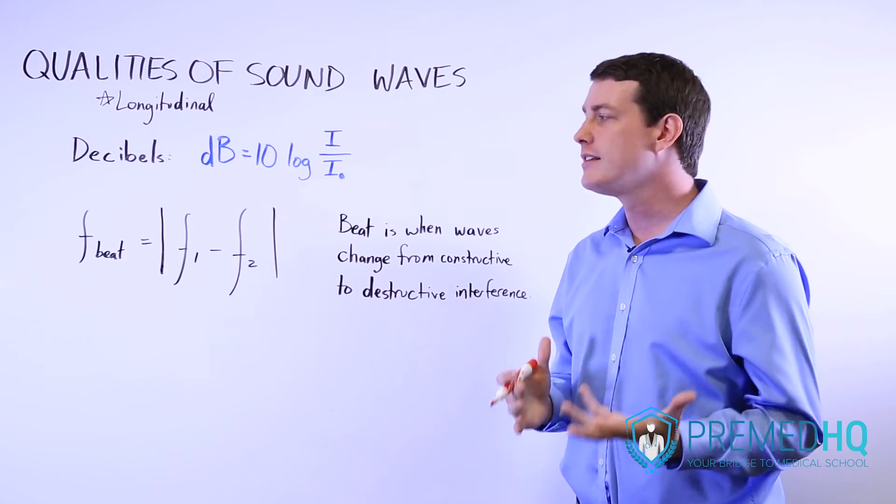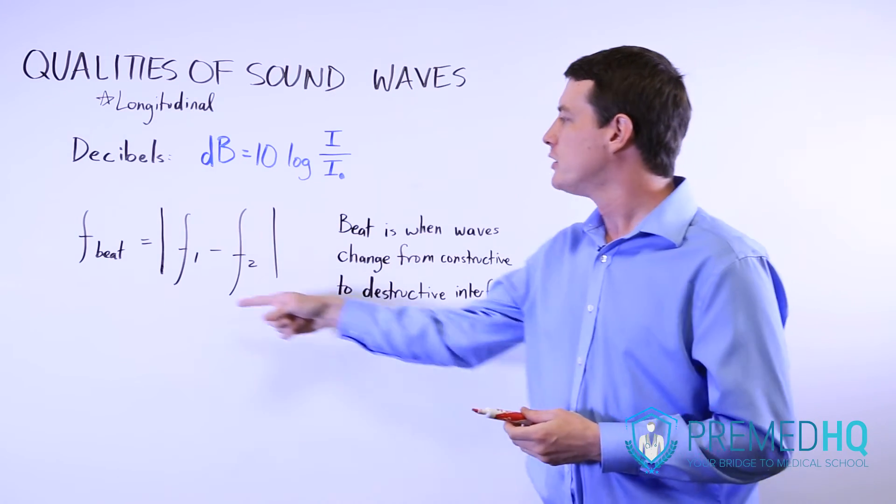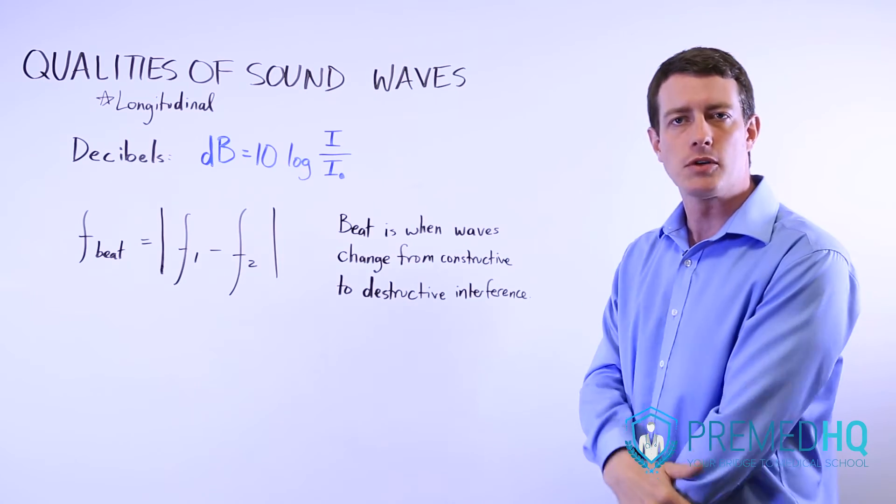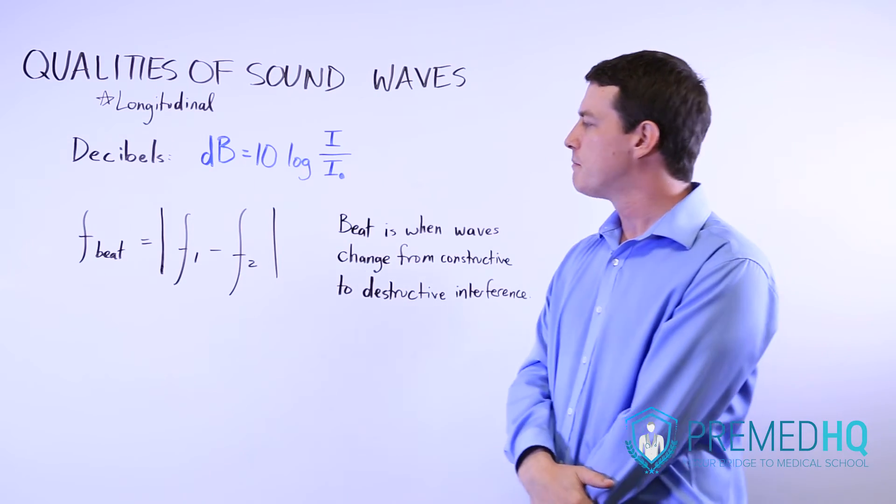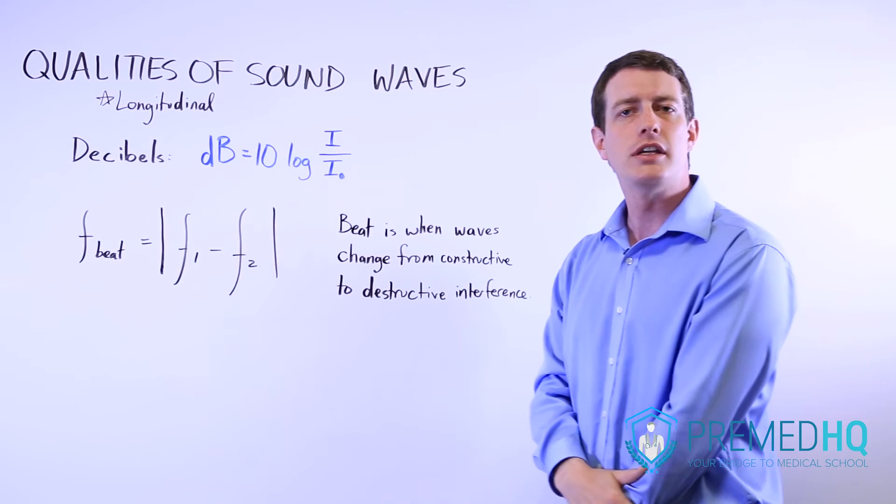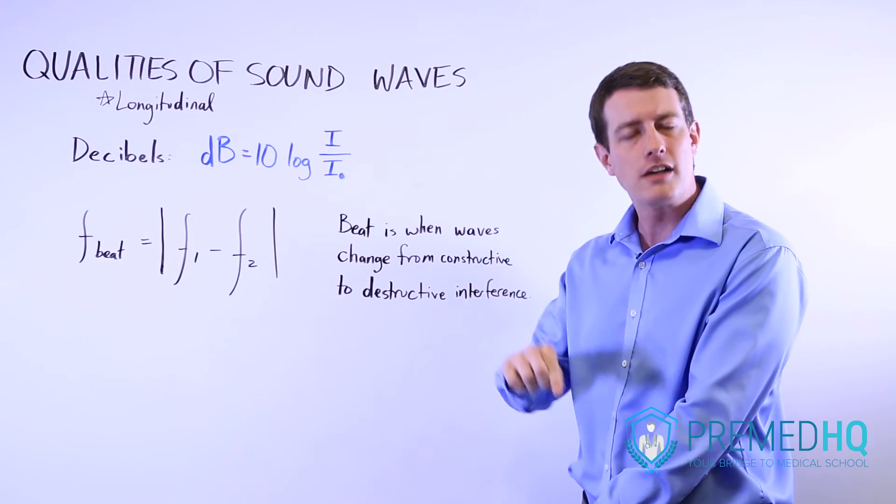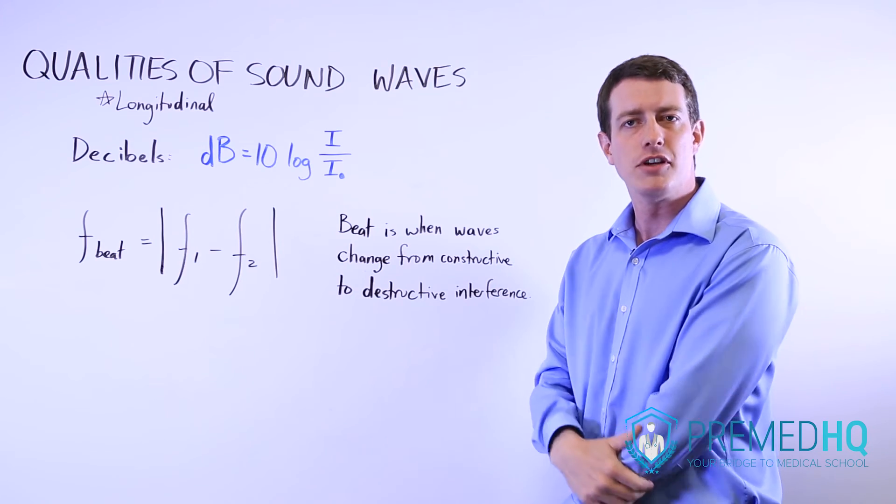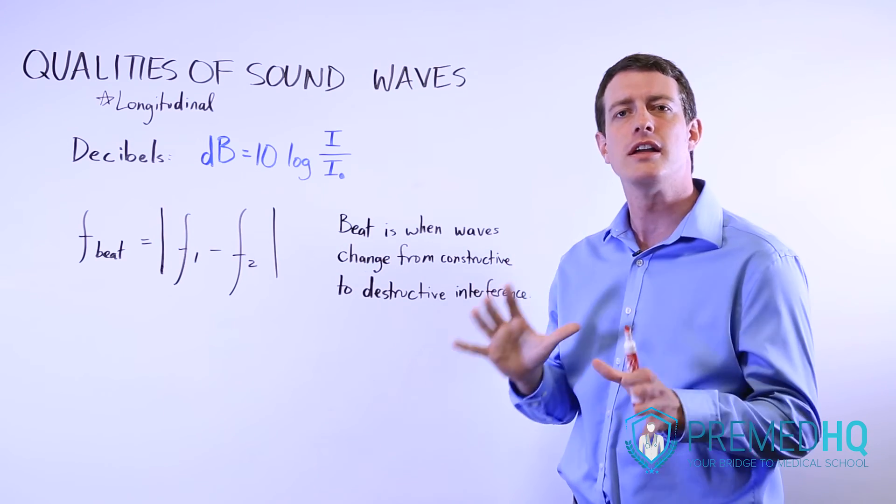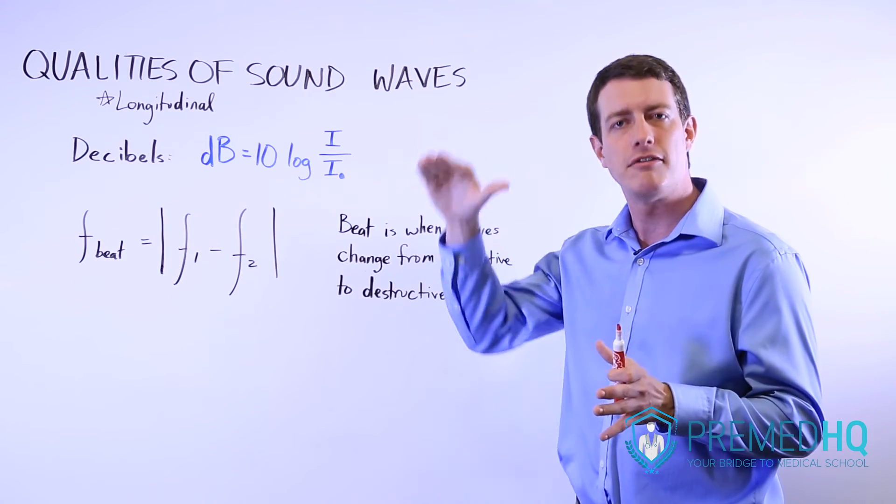The way to calculate beats is simply by looking at the difference in frequency between the two waveforms. So if they differ perhaps by two hertz, then you'll hear a beat two times every second. And so you'll hear that oscillating sound twice every second, and that will also be very visible if you're looking at the graph of the waveform.